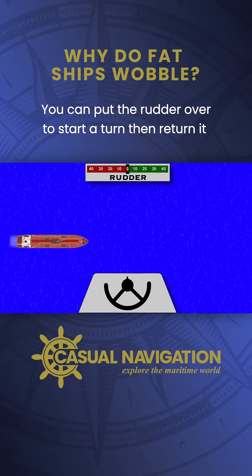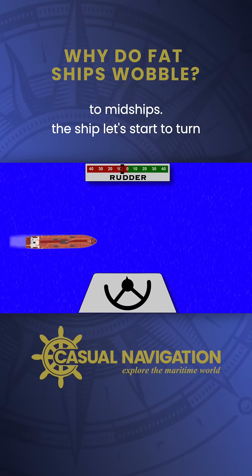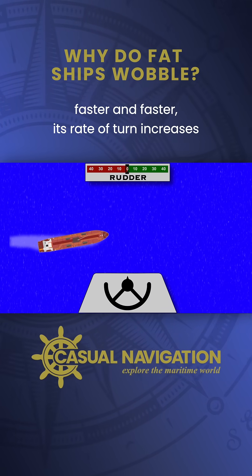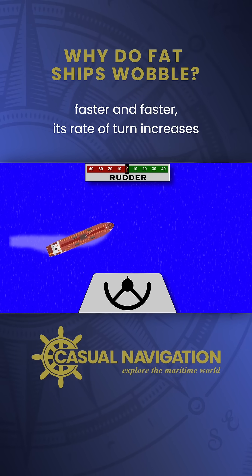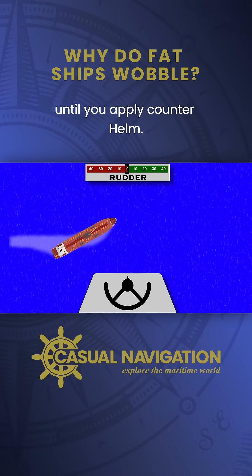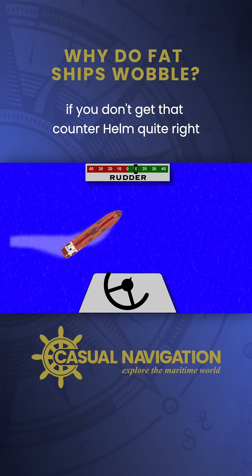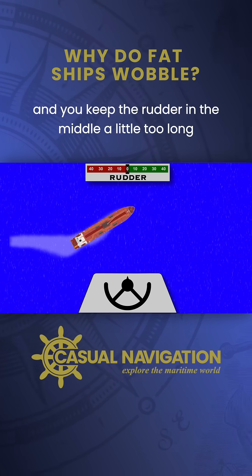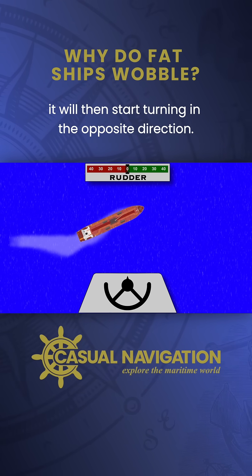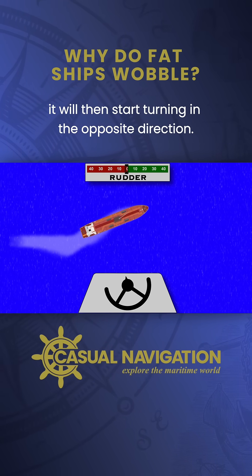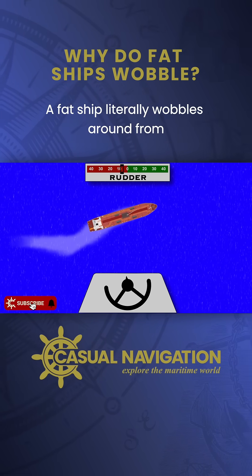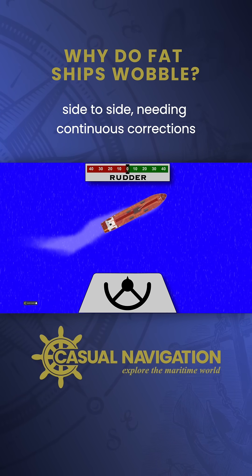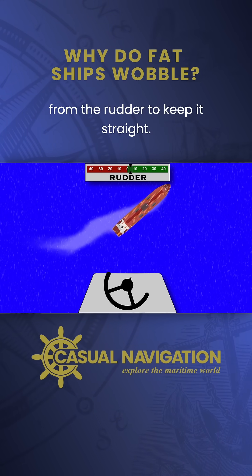You can put the rudder over to start a turn, then return it to midships. The ship will then start to turn faster and faster — its rate of turn increases until you apply counter-helm. If you don't get that counter-helm quite right and you keep the rudder in the middle a little too long, it will then start turning in the opposite direction. A fat ship literally wobbles around from side to side, needing continuous corrections from the rudder to keep it straight.